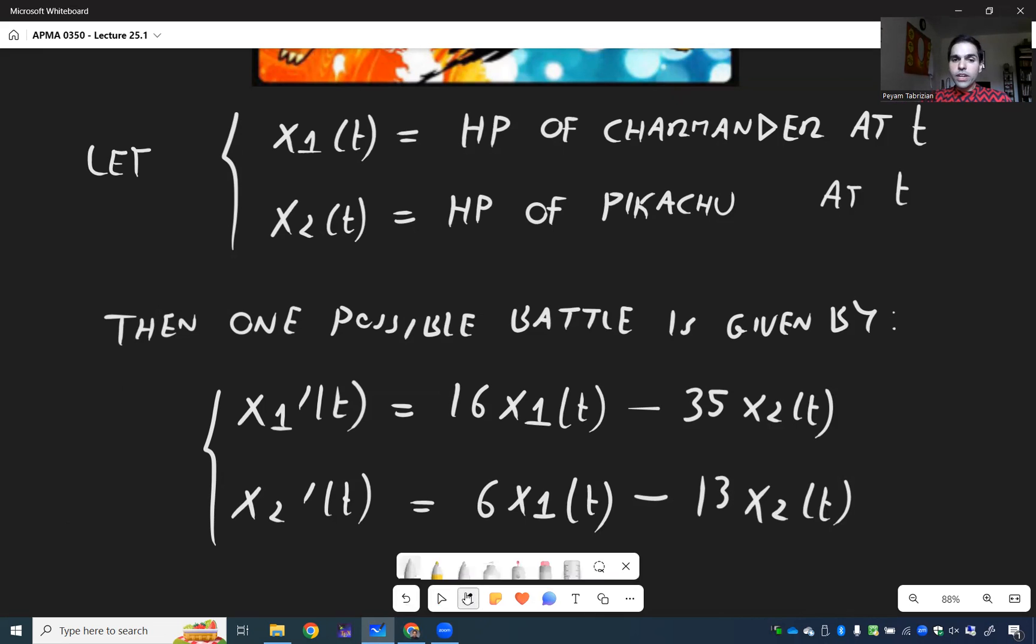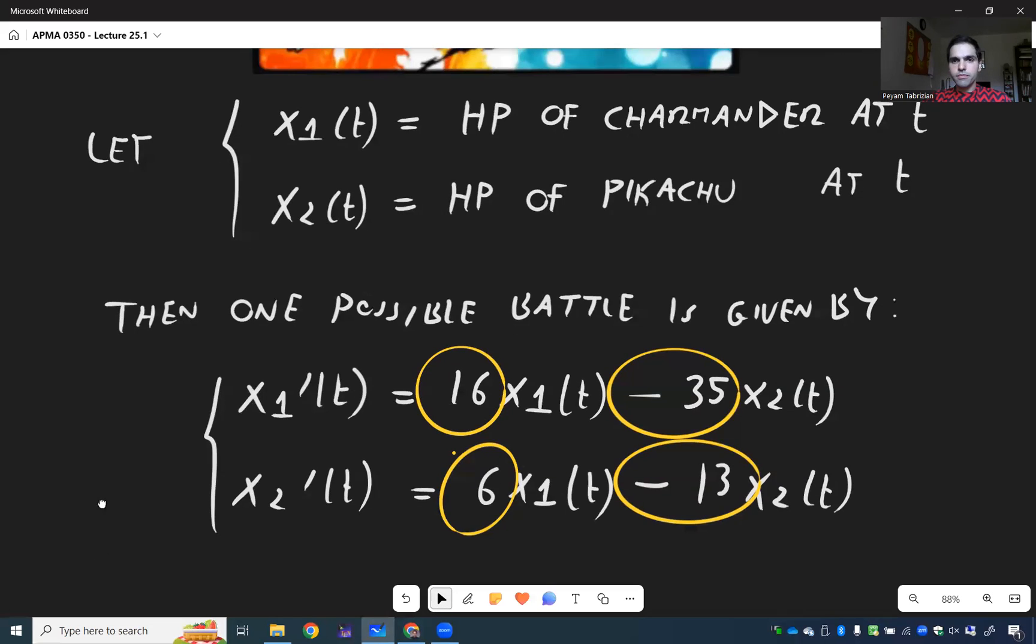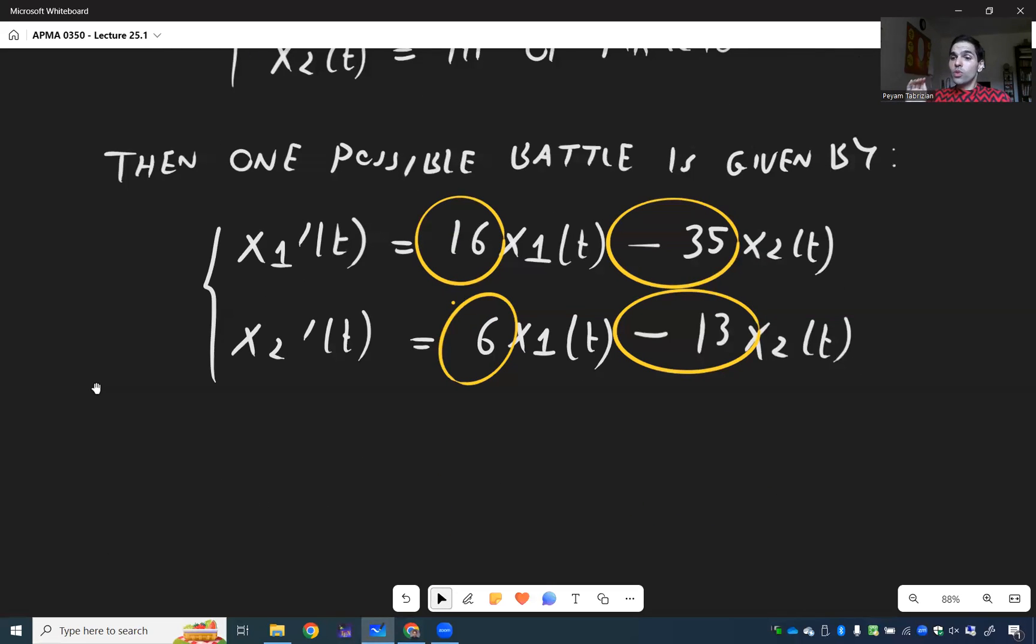And I like this very much because it really shows how versatile systems of differential equations are because it turns out we can interpret each of those numbers in terms of our battle. So it's a really great way of motivating systems of differential equations because here is what those numbers mean concretely. So remember X1 prime measures how the life of Charmander changes. So here we say somehow the rate of change of Charmander is positively influenced by itself so Charmander does something to itself to increase its hit points and that is healing.